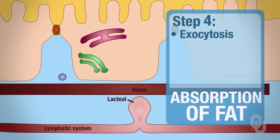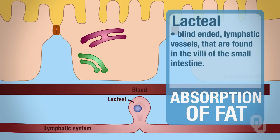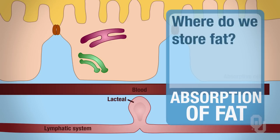The chylomicron is too large to go directly into the blood, so it bypasses the blood completely and enters a structure called the lacteal. Lacteals are blind-ended lymphatic vessels located in the villi of the small intestine. The chylomicron inside the lacteal enters the lymphatic system, which is directly connected to circulation. So the triglyceride enters the blood via the lymphatic system. It then goes to adipose tissue, where we store fat, and when necessary it can be broken down as a source of energy. These triglycerides can also be stored in other cells.